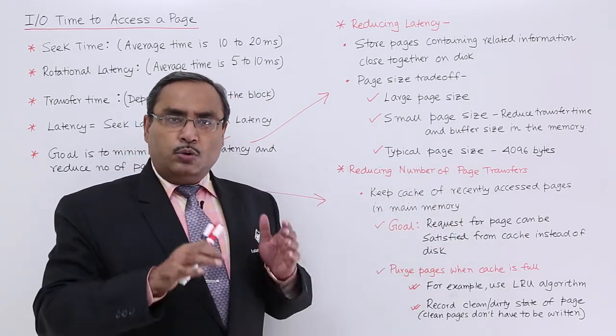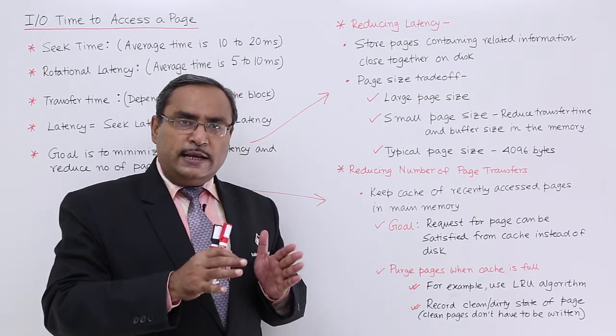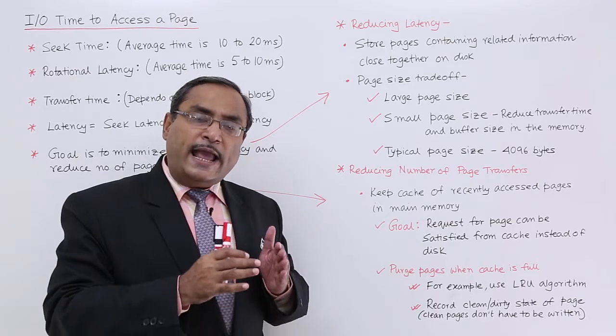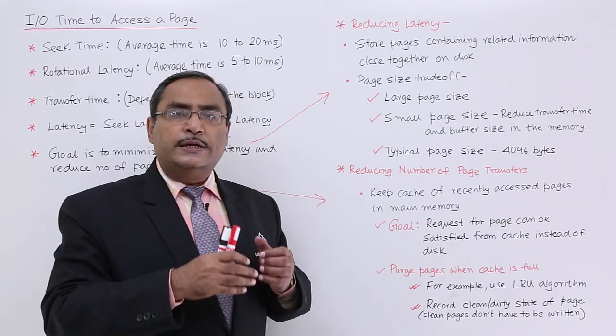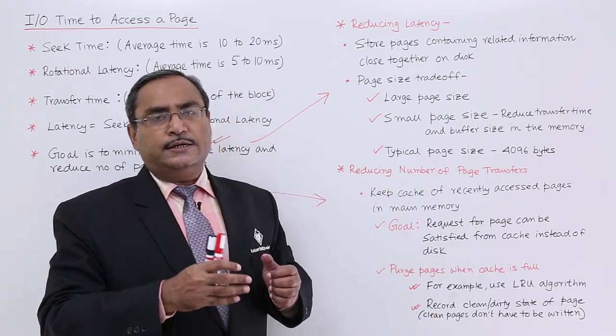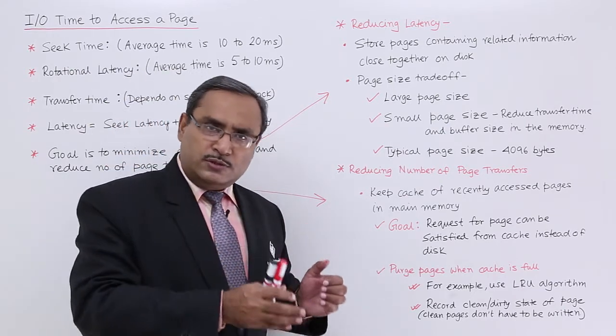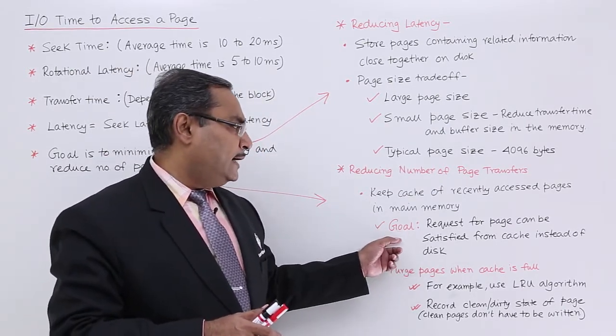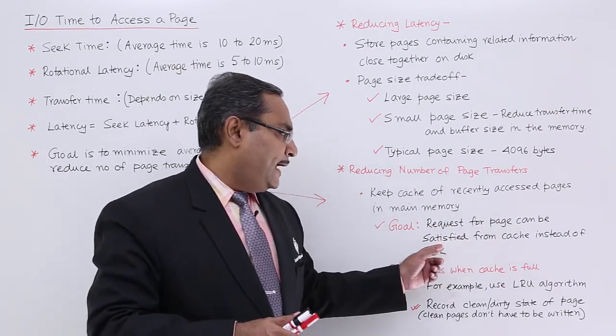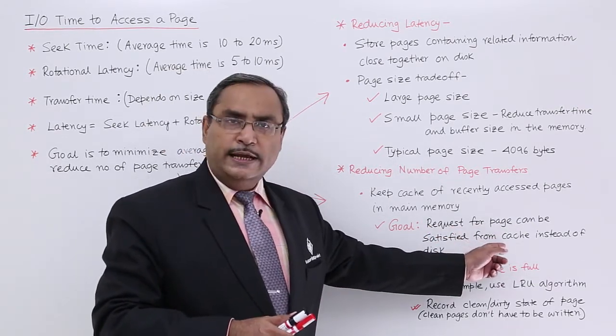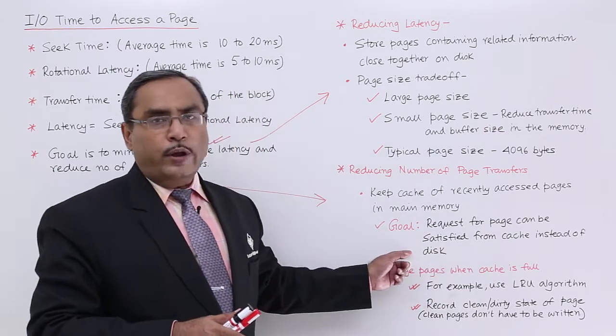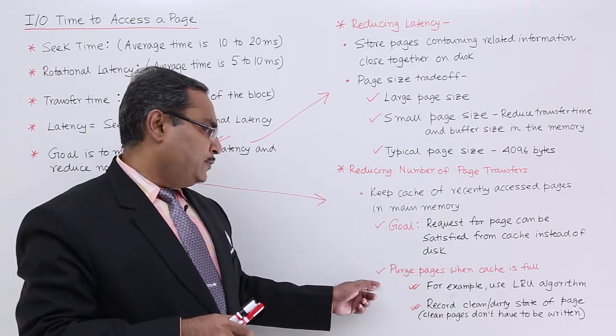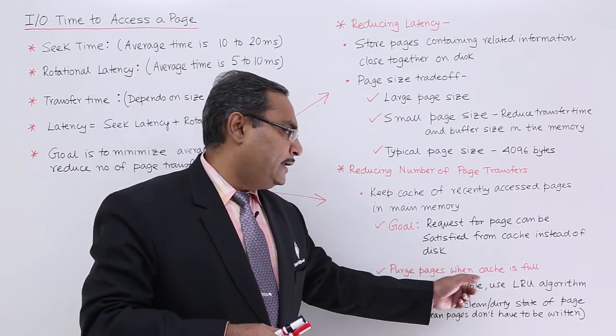Keep cache of recently accessed pages in the main memory. Those pages which are recently accessed may be required in near future also, they must be kept in the cache so that the page will be hit from the cache instead of reading it from the disk storage again. The goal is that request for page can be satisfied from the cache itself instead of going for the disk read or disk access.